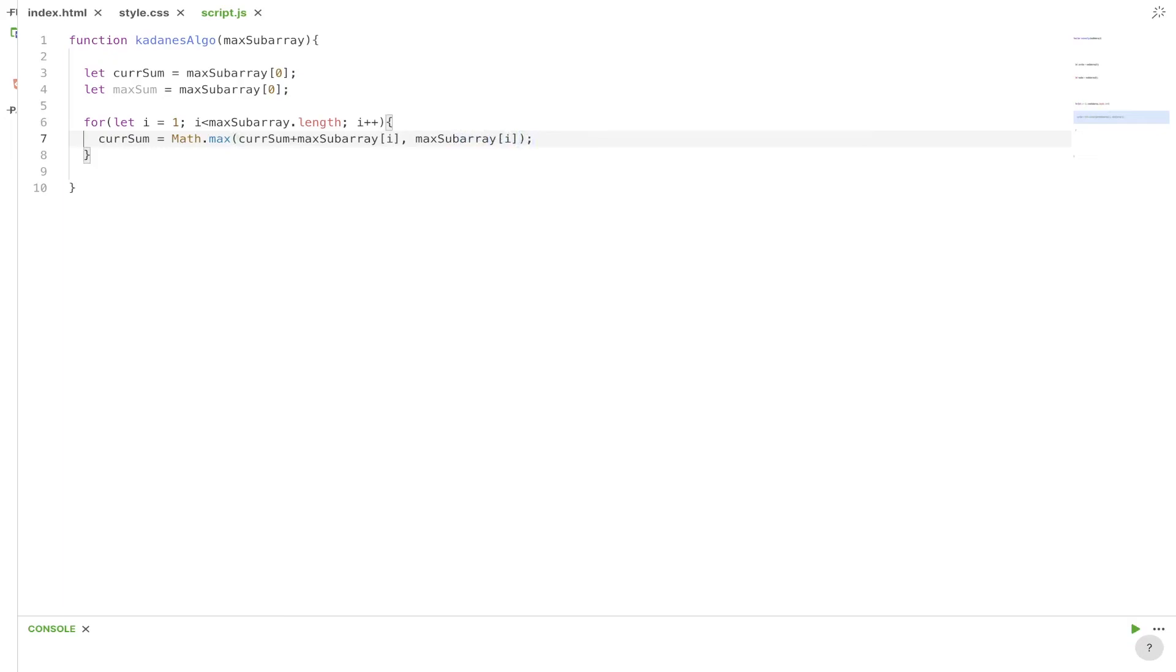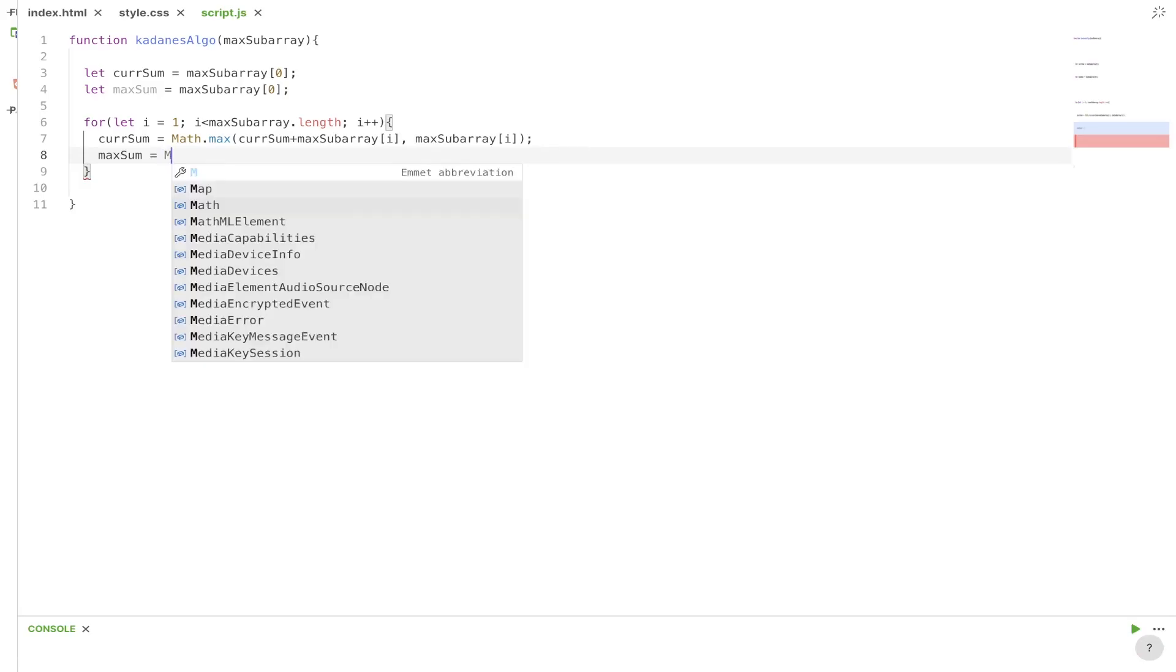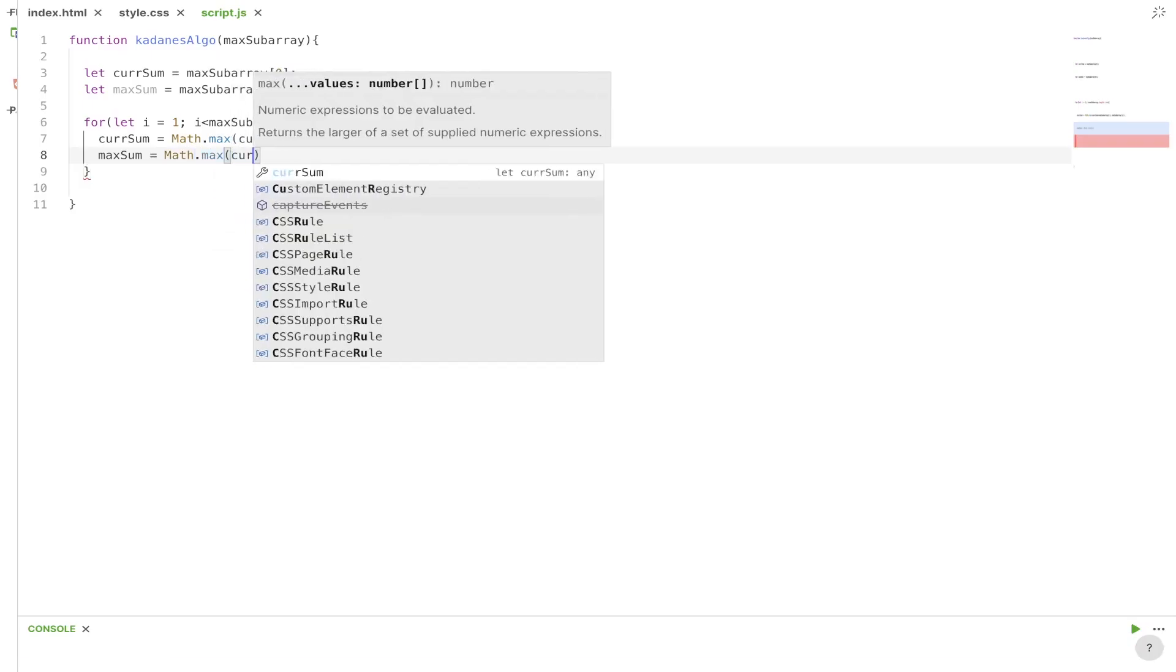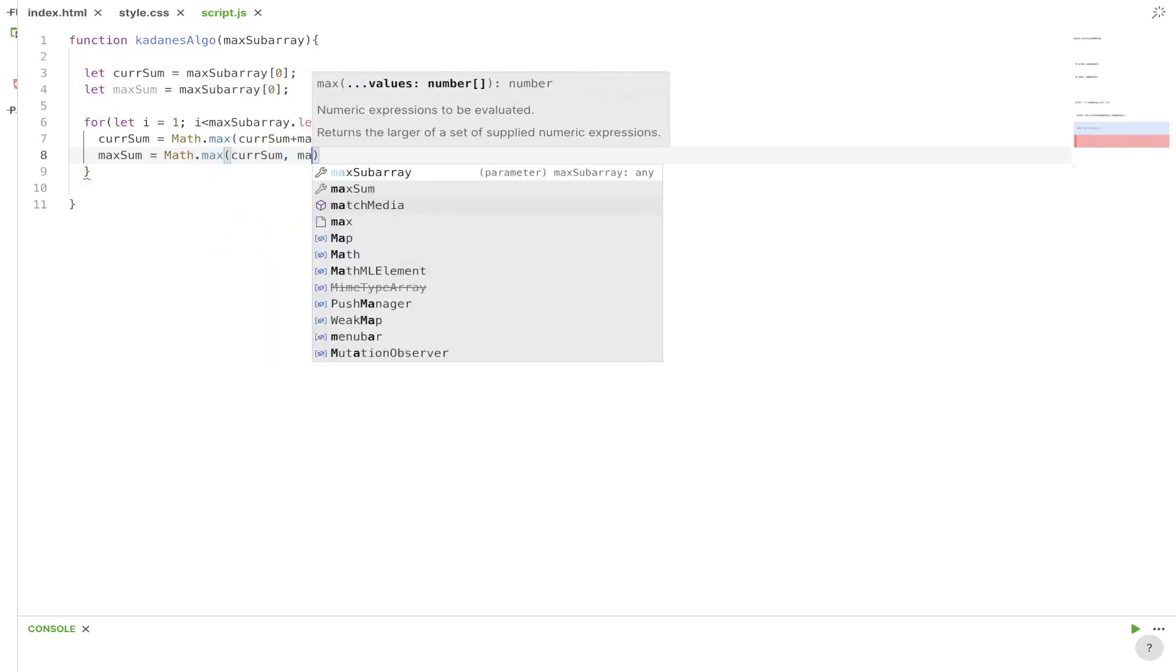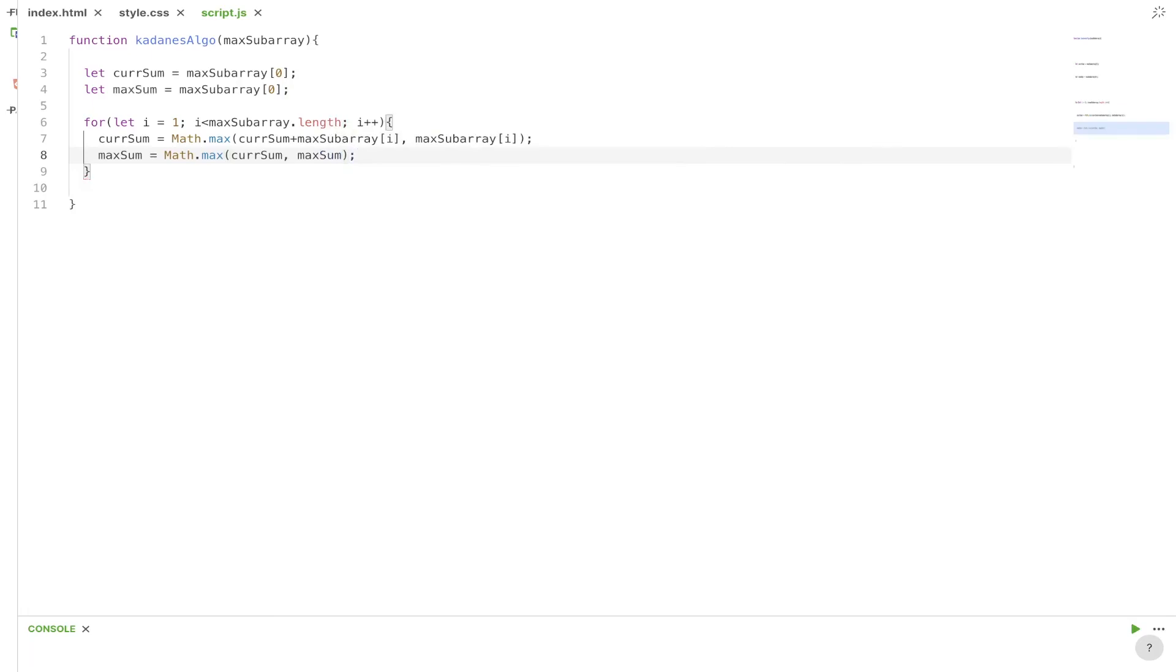So once we've updated that, we can check to see whether the current value of current sum is greater than the current max sum. So that'll be math dot max, current sum, max sum. And then we can return max sum.